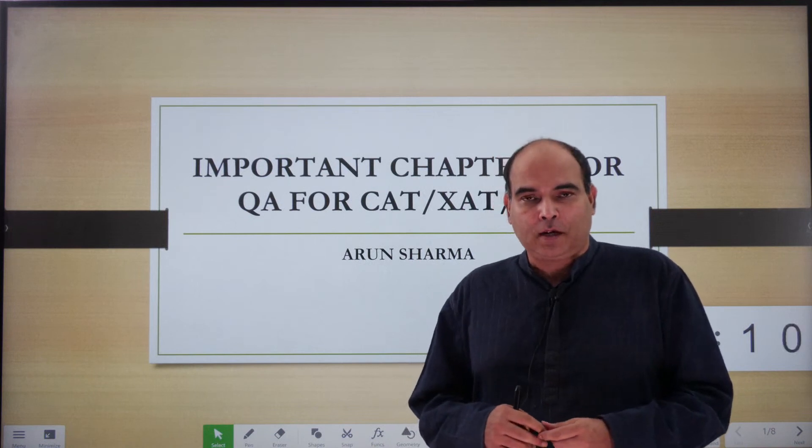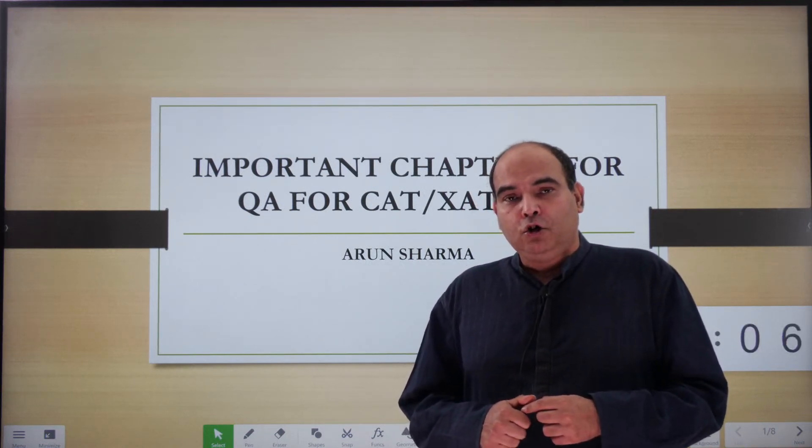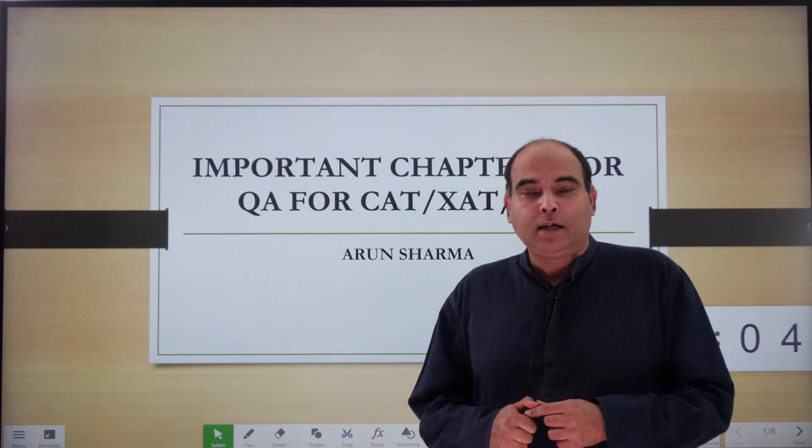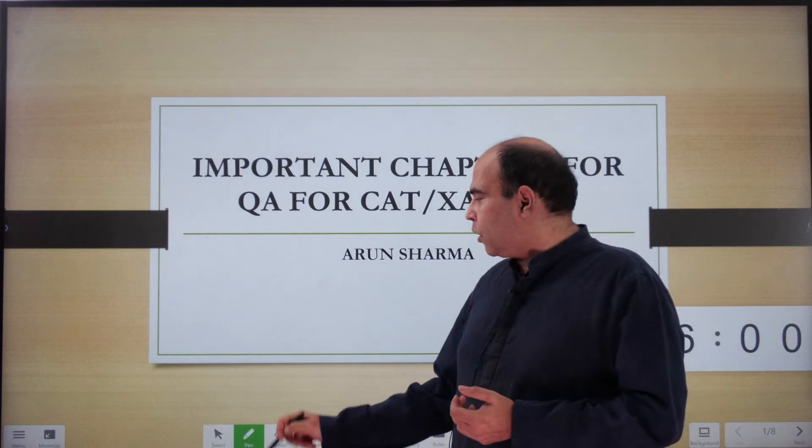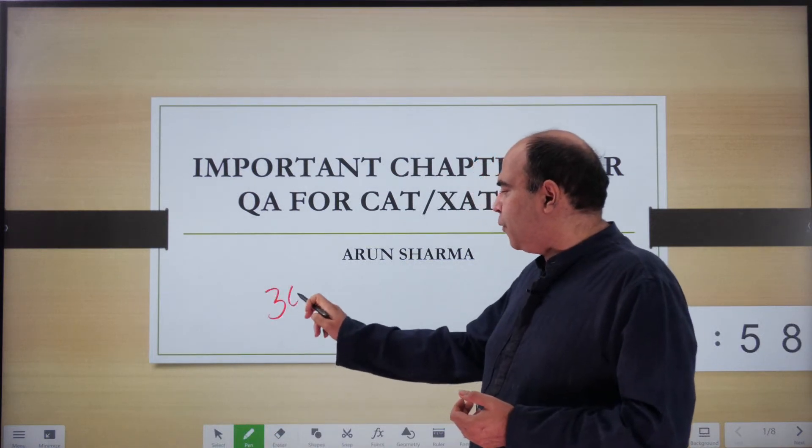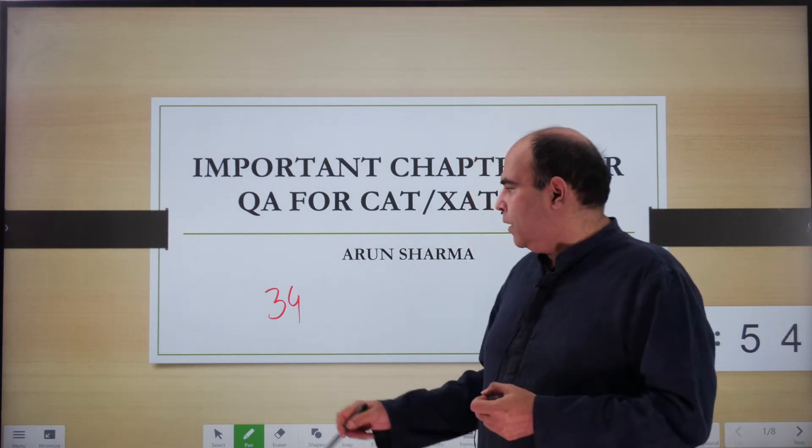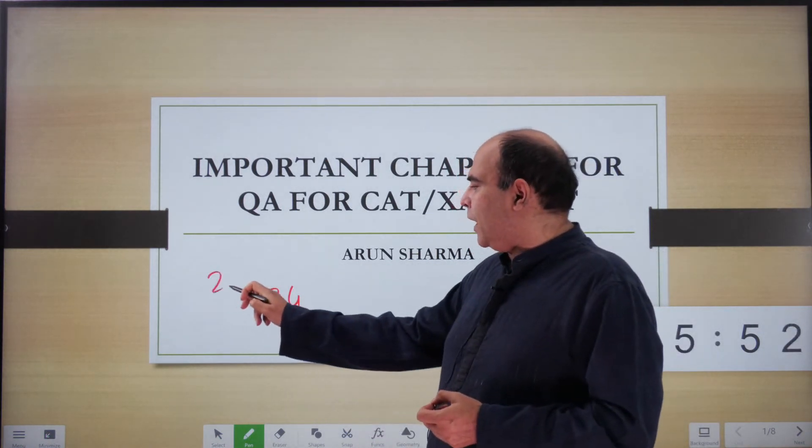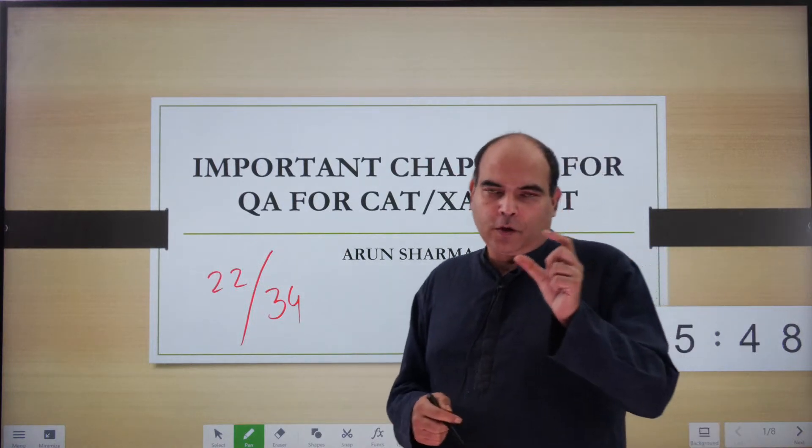The problem with not doing a chapter when you're talking about CAT is that normally in a three-hour exam, you're essentially talking about a choice of 34 questions. If you're trying to get a 90-odd percentile, 95, 97 percentile, you're trying to attempt 22 out of 34, so you've got a choice of 12 questions.